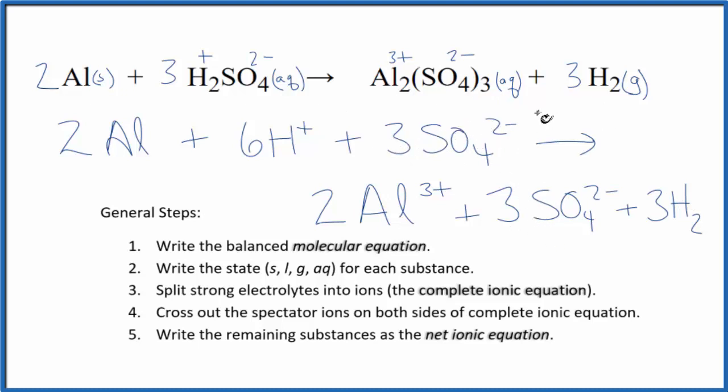So since we have three sulfate ions here and three here, we can cross those out. But everything else is unique, and that'll give us the net ionic equation for Al plus H2SO4.